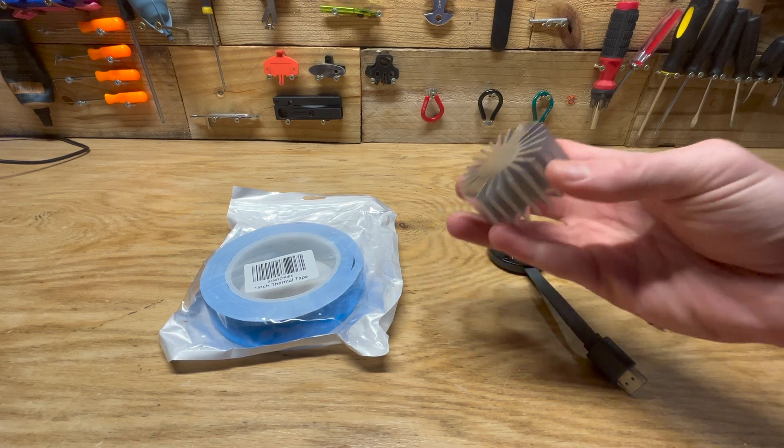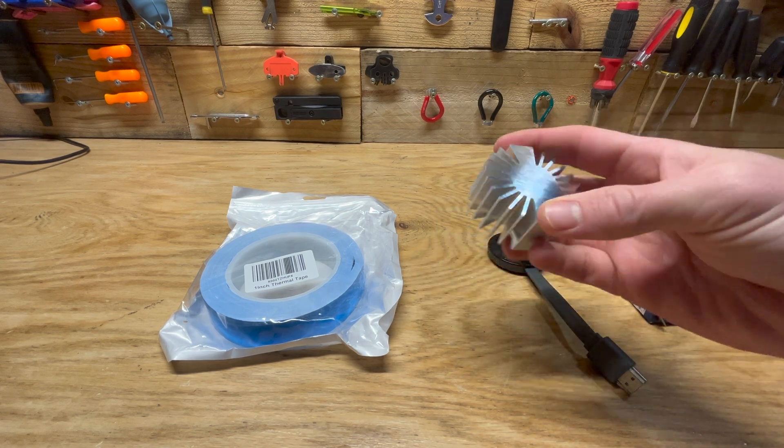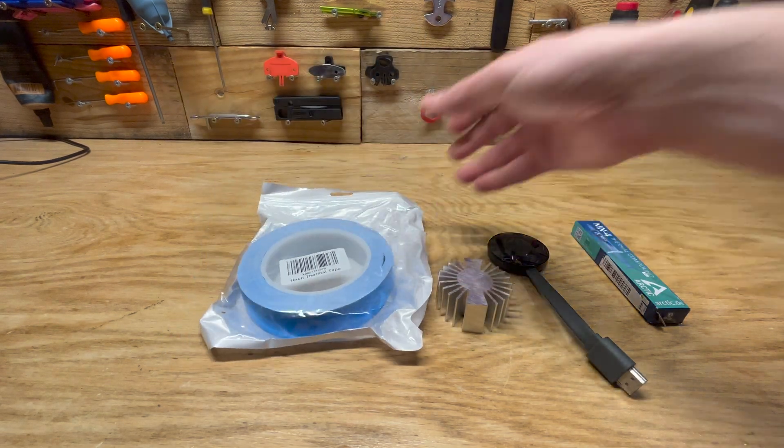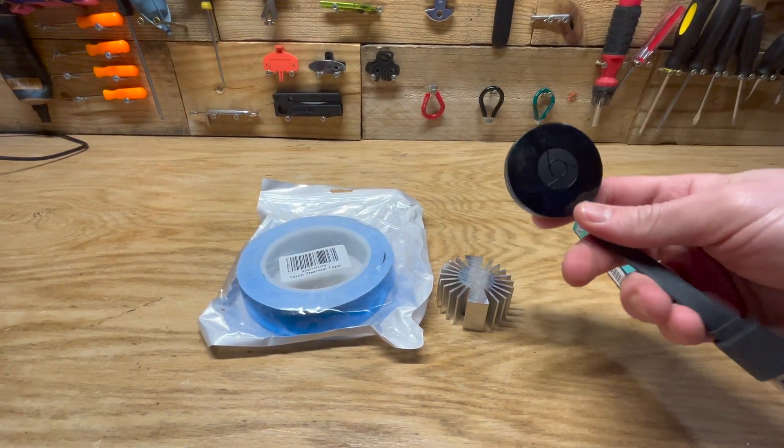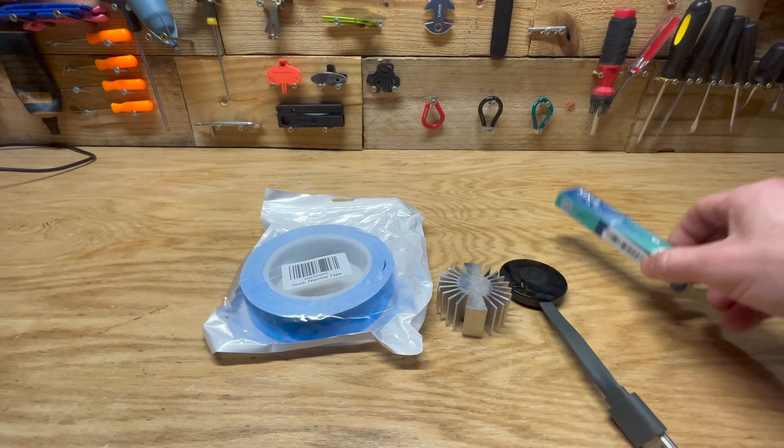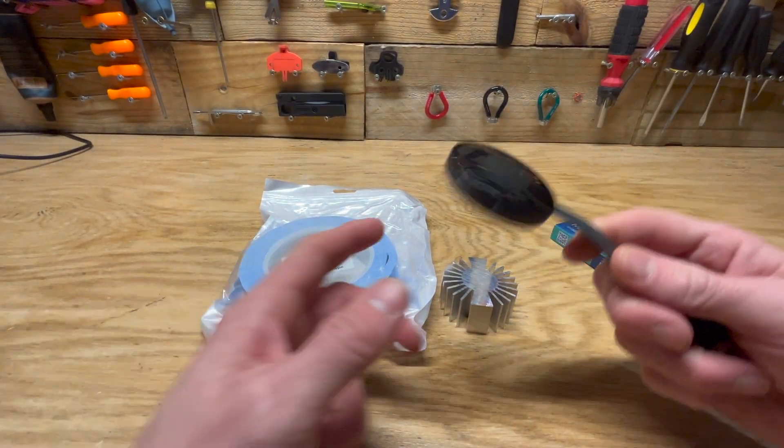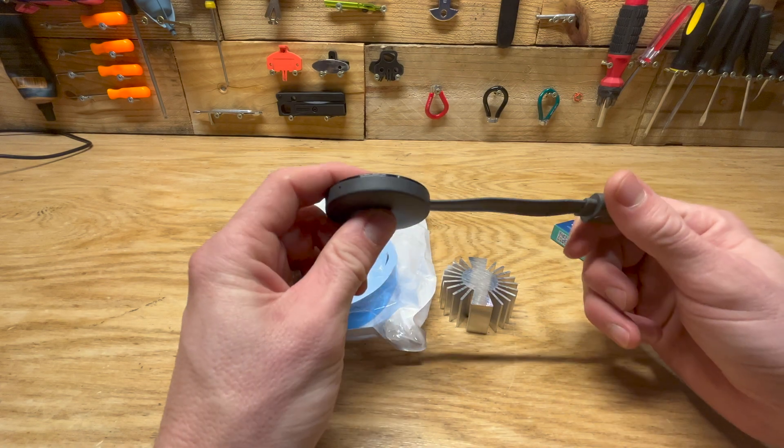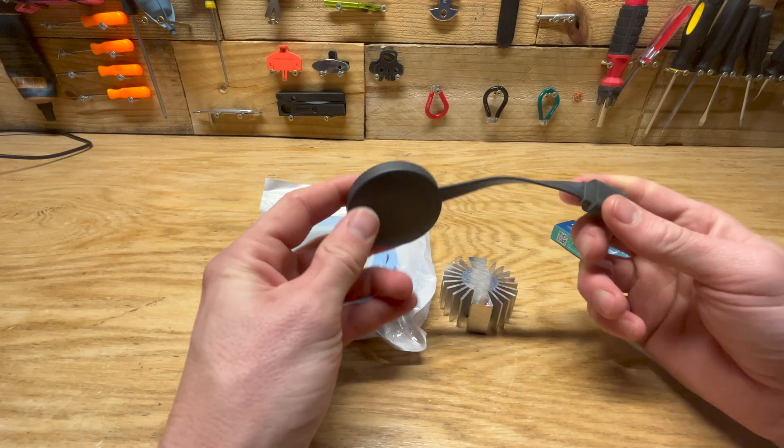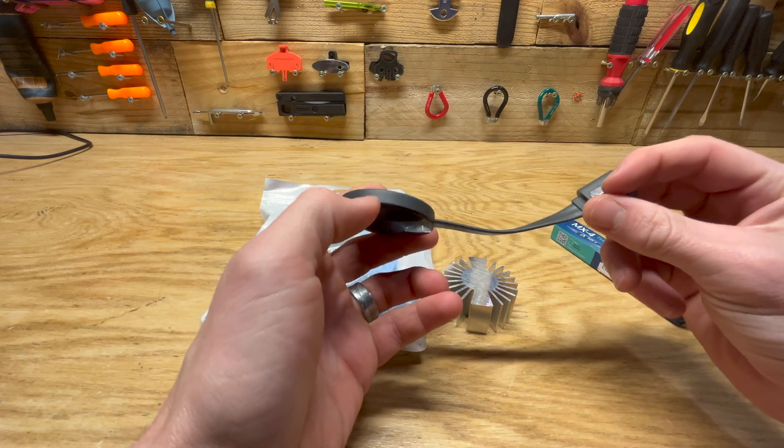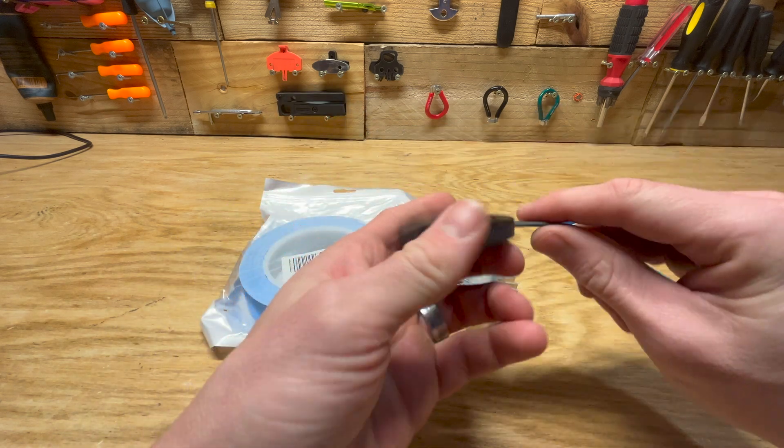We're going to put this heat sink on using thermal tape. Over time, the thermal paste on these doesn't work as well—it dries up. That's why most people will notice decreased performance from their Google Chromecast, especially when casting something from your laptop.